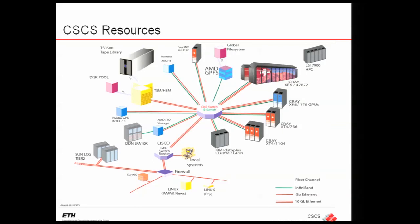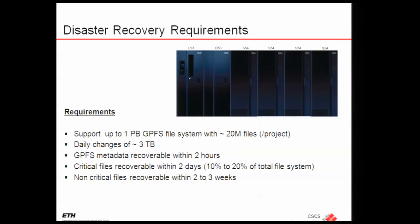If we go back one year ago, we can see that this has really changed a lot. Concerning requirements: the file system is roughly one petabyte capacity, 20 million files — that was the plan. I checked last week and that number changed again; there are now 35 million files.